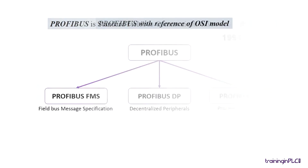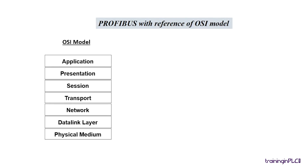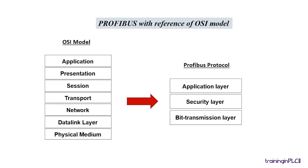Next, let us see the PROFIBUS protocol with the reference of the OSI model. The OSI has seven layers, and PROFIBUS has three layers: Layer 7 as application layer, and layers from 3 to 6 of the OSI model are not used in the PROFIBUS protocol, and the Datalink layer as a security layer, and physical layer as a bit transmission layer.